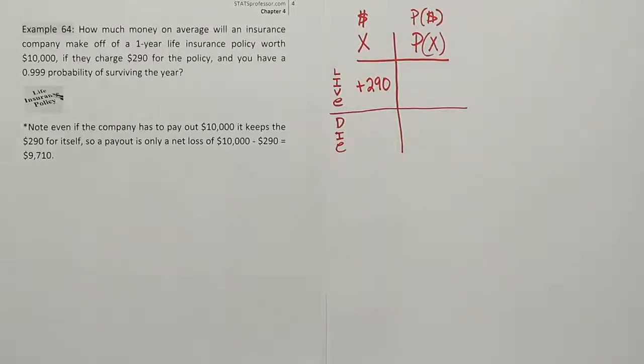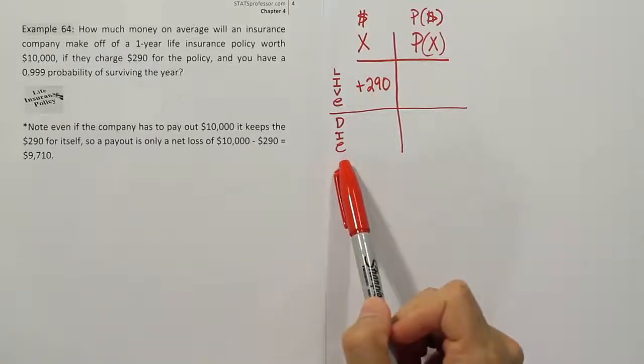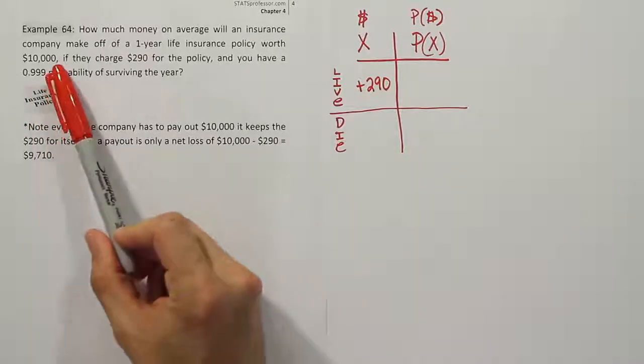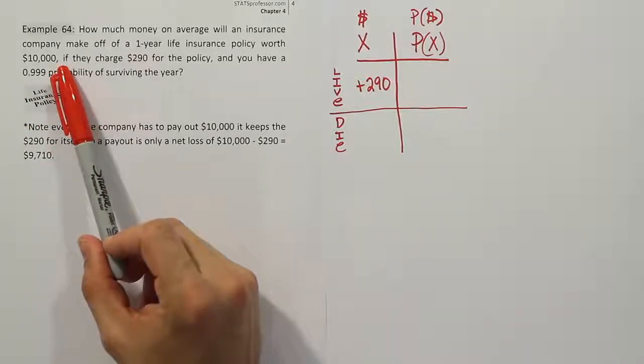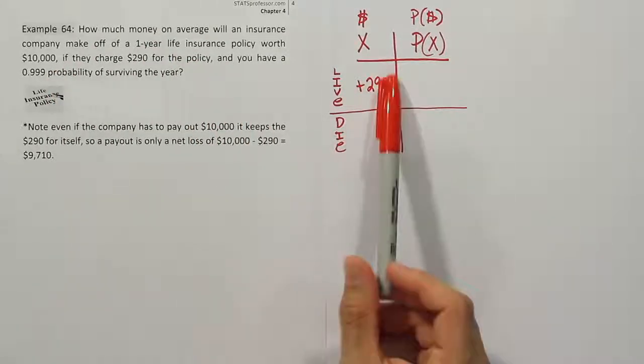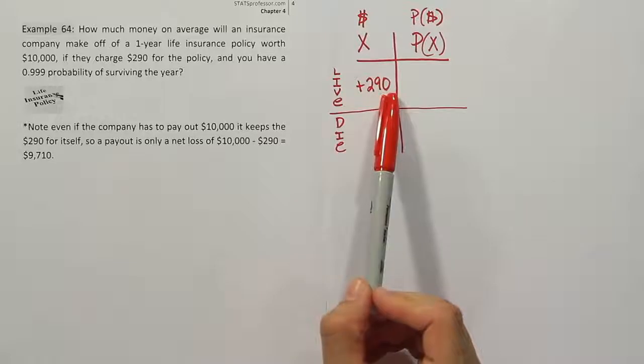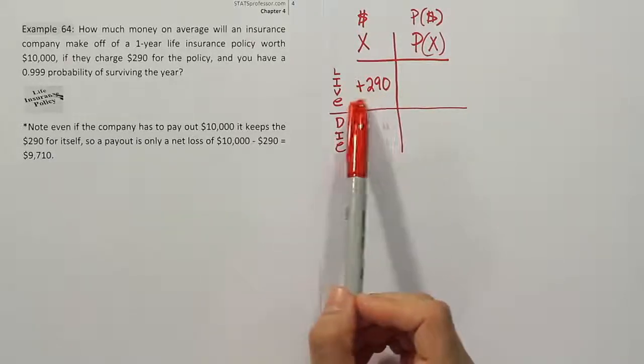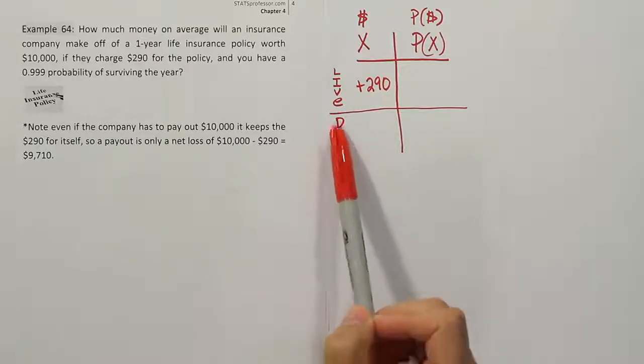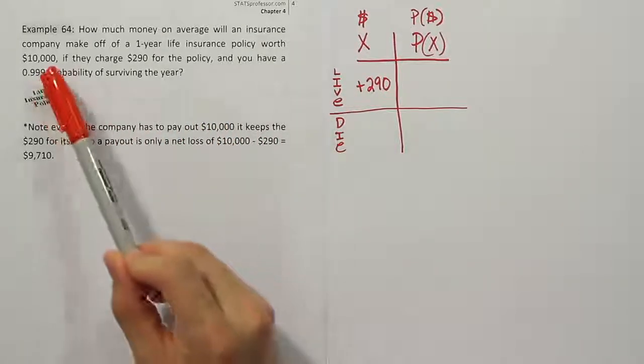Now if I think about the other scenario, where the person dies who I sold the policy to, unfortunately, I've got to write out a check to his family or her family and pay them a $10,000 check. But we want to keep in mind something important. That isn't a $10,000 loss to the company, because the company still has that original $290 that the person paid.